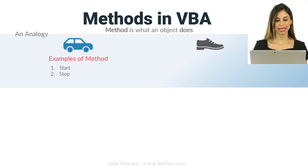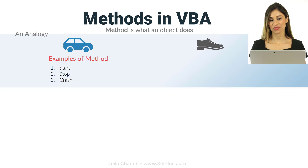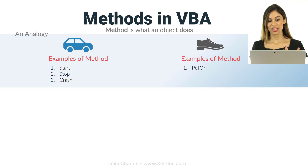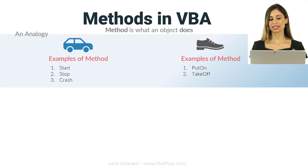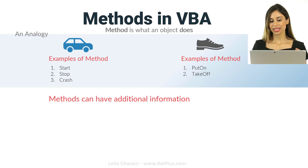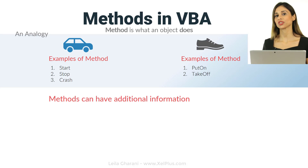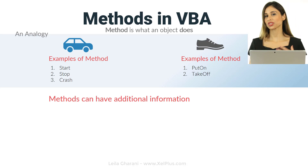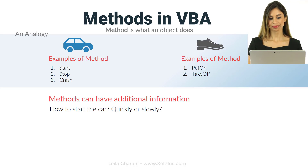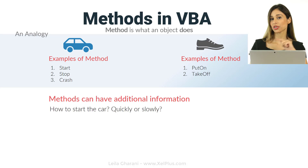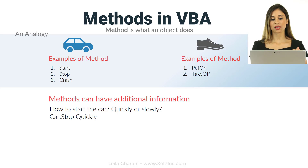A car can start, stop, or crash — those were the only methods I could come up with. For a shoe, you can put it on or take it off. These are things you can do with these objects. Methods can also have additional arguments. For example, how do you want to start the car — quickly or slowly? So quickly and slowly are arguments of the start method.